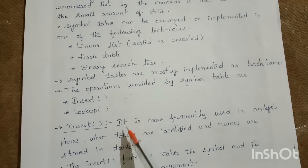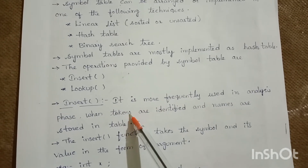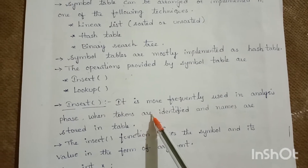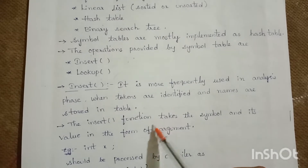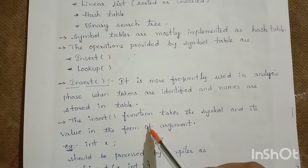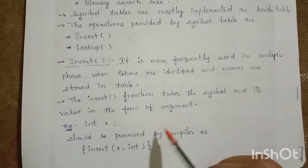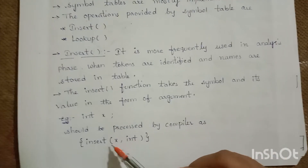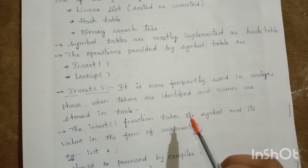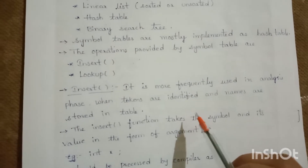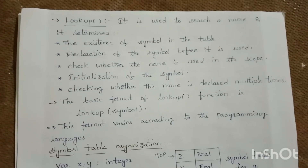The operations provided by a symbol table are insert and lookup. Insert is more frequently used in the analysis phase when tokens are identified and names are stored in the symbol table. The insert function takes the symbol and its value as arguments — for example, 'int x' should be processed by the compiler as insert(x, int).